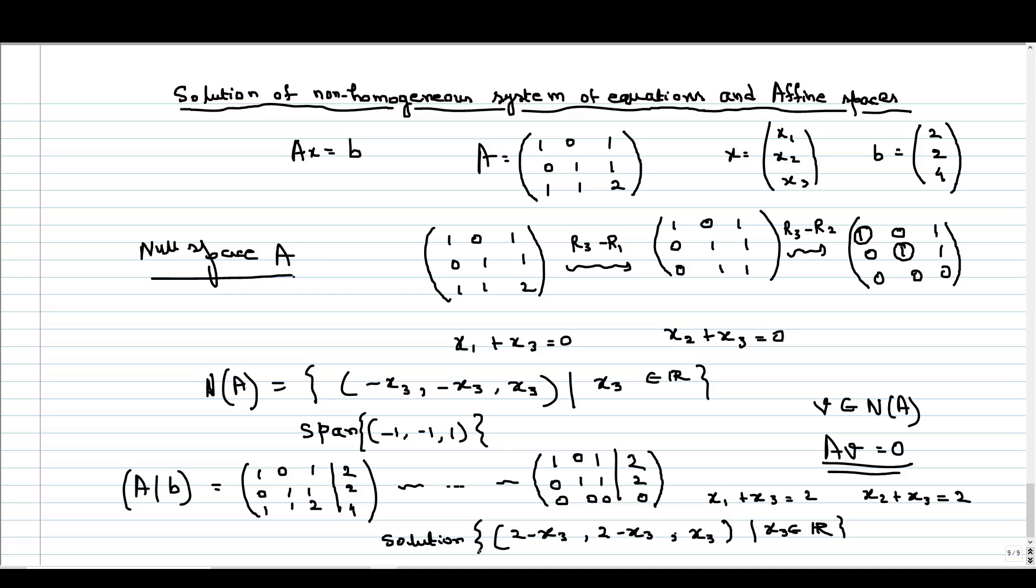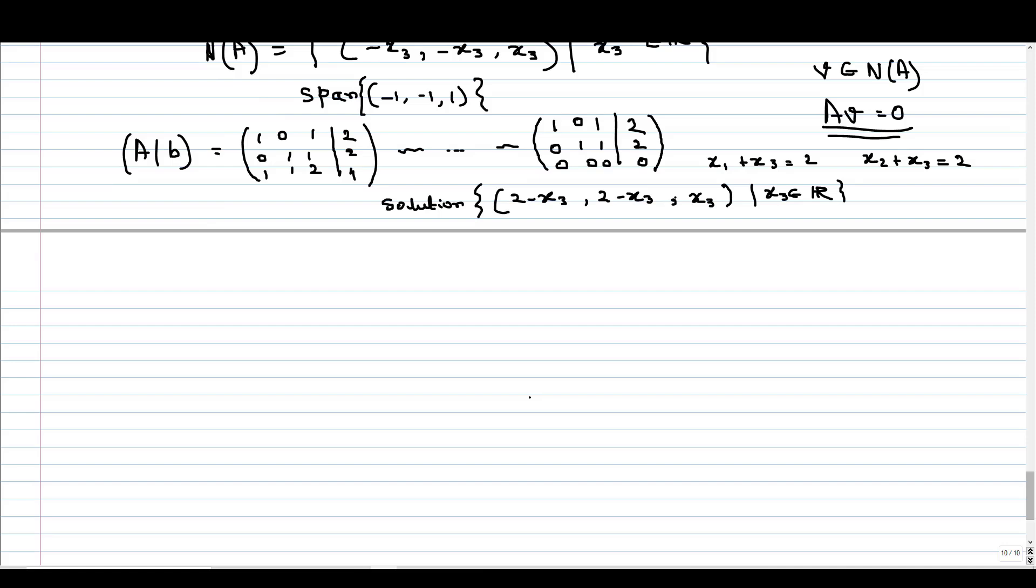This is our solution set where x3 comes from real numbers. All these vectors are solutions of Ax equals b. We can express it in terms of 2, 2, 0 plus the set minus x3, minus x3, x3 where x3 belongs to R. This is our null space. And this vector we denote by u.